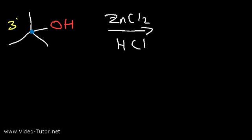The Lucas reagent comprises of zinc chloride and hydrochloric acid. Now, zinc chloride is the Lewis acid that activates the reaction. Right now, OH is a bad leaving group. However, we can turn it into a good leaving group by putting a positive charge on the oxygen.